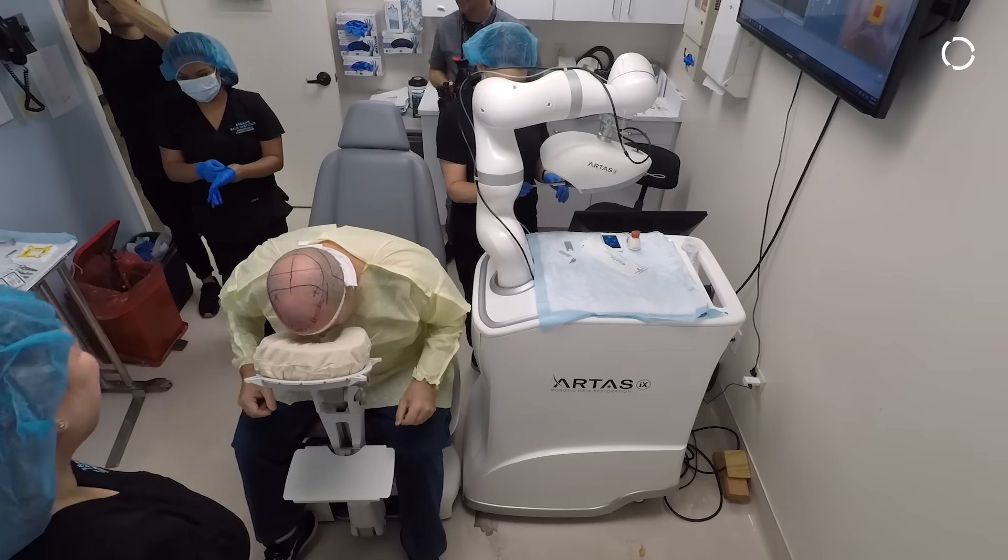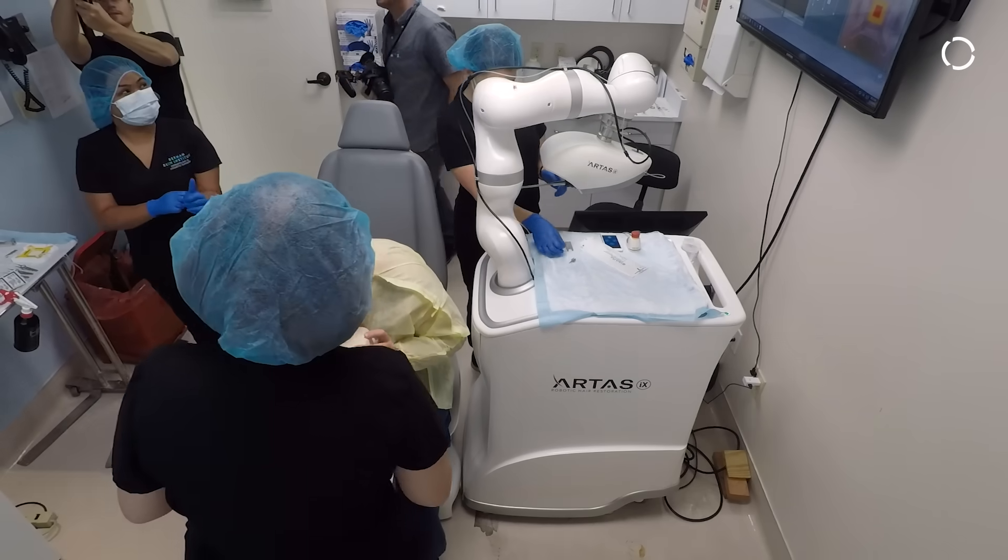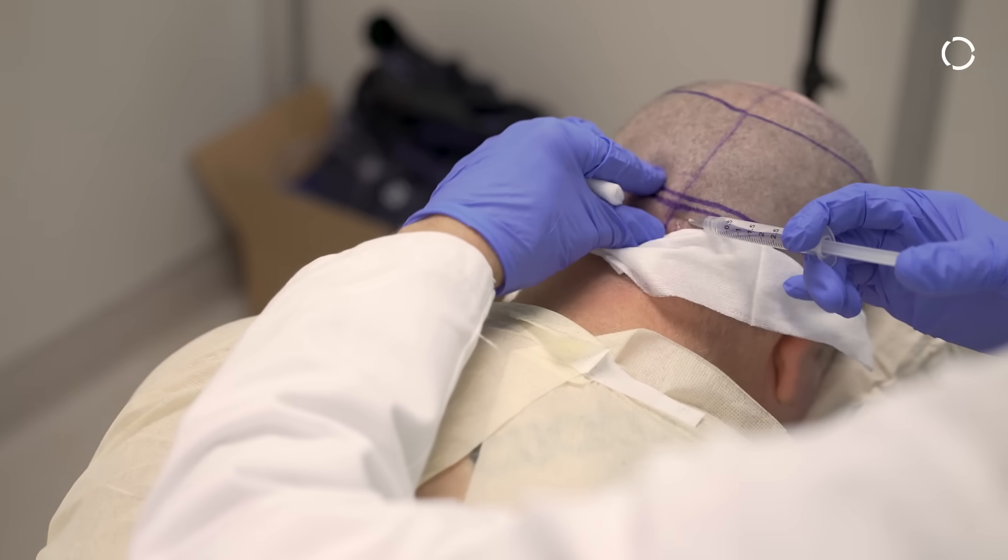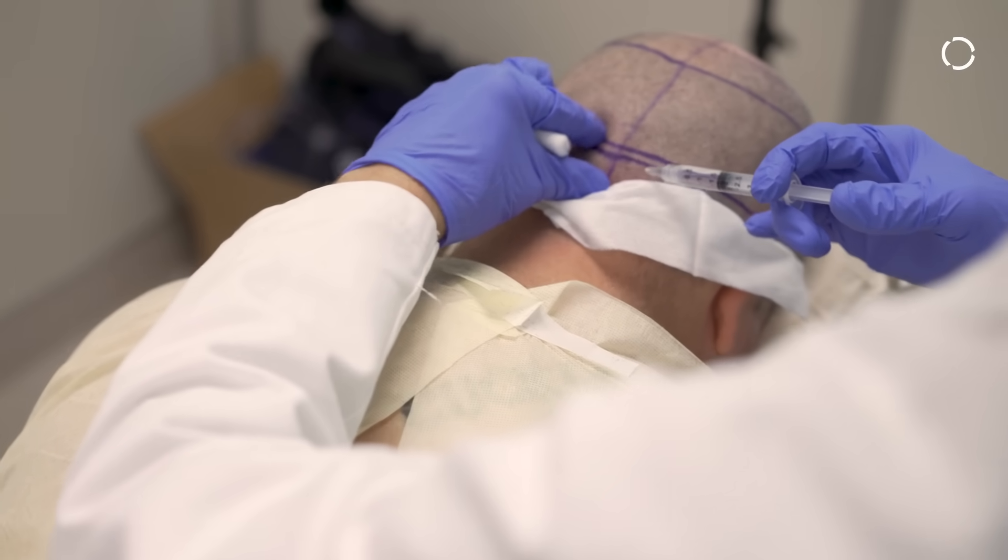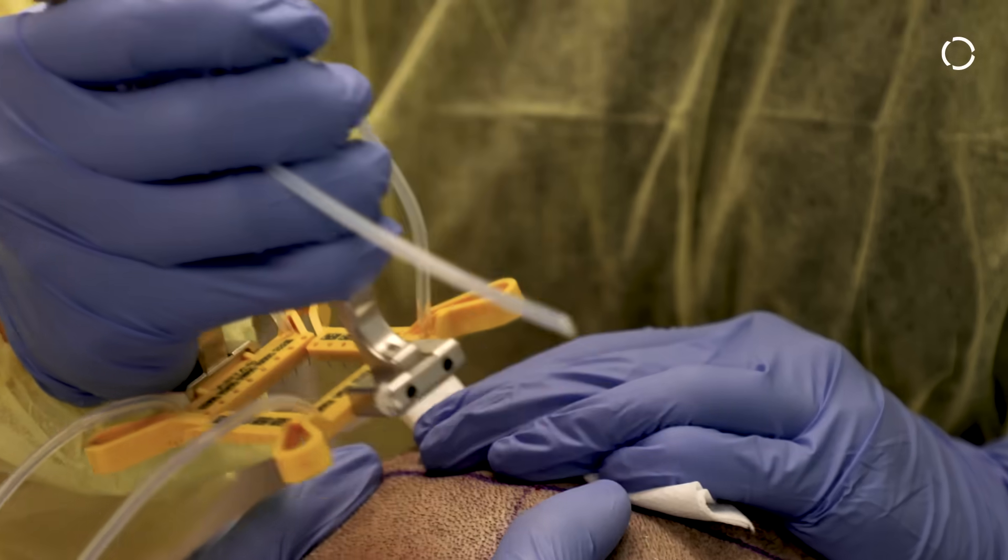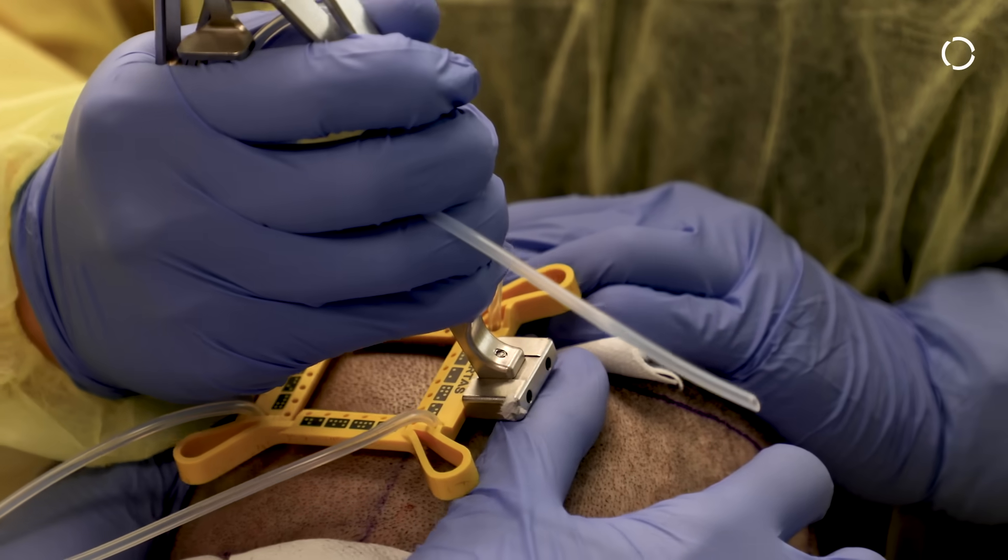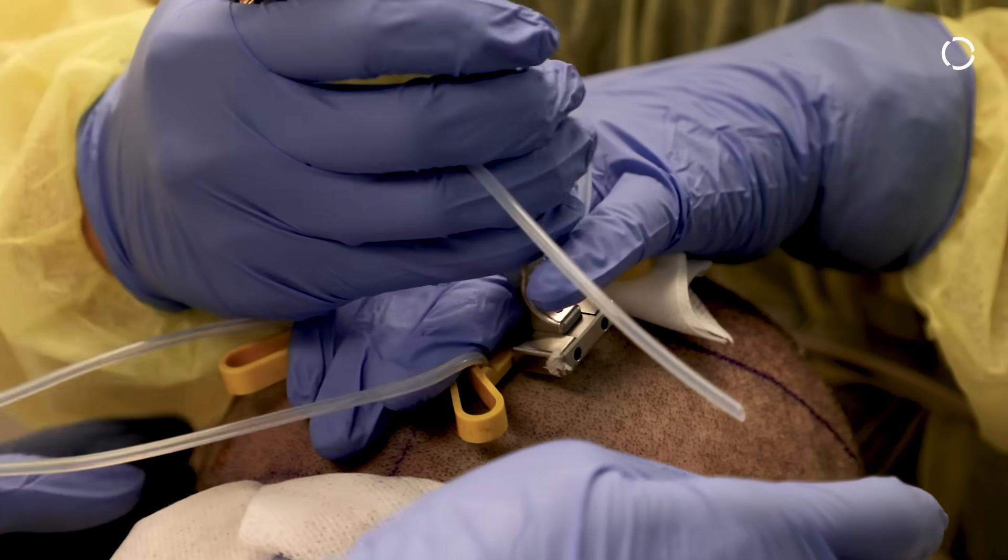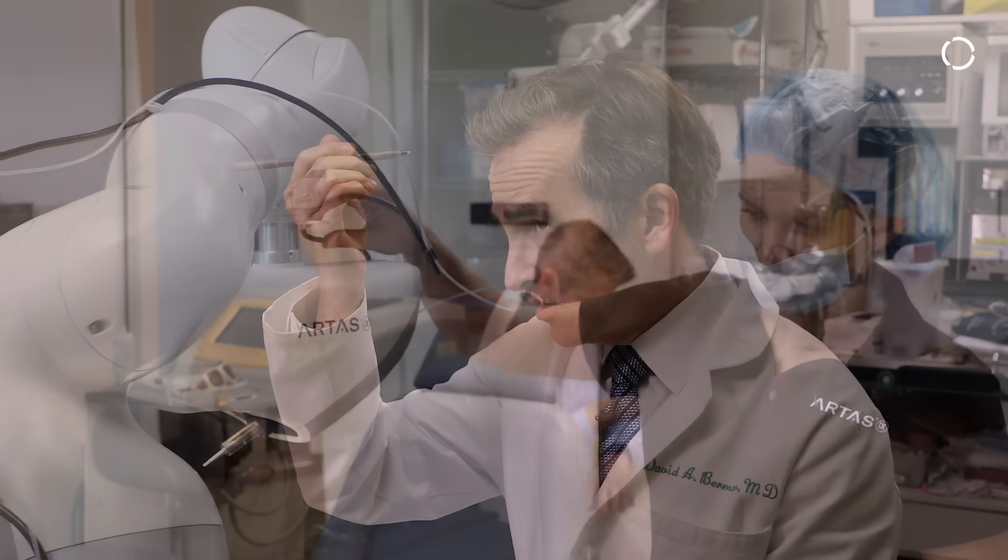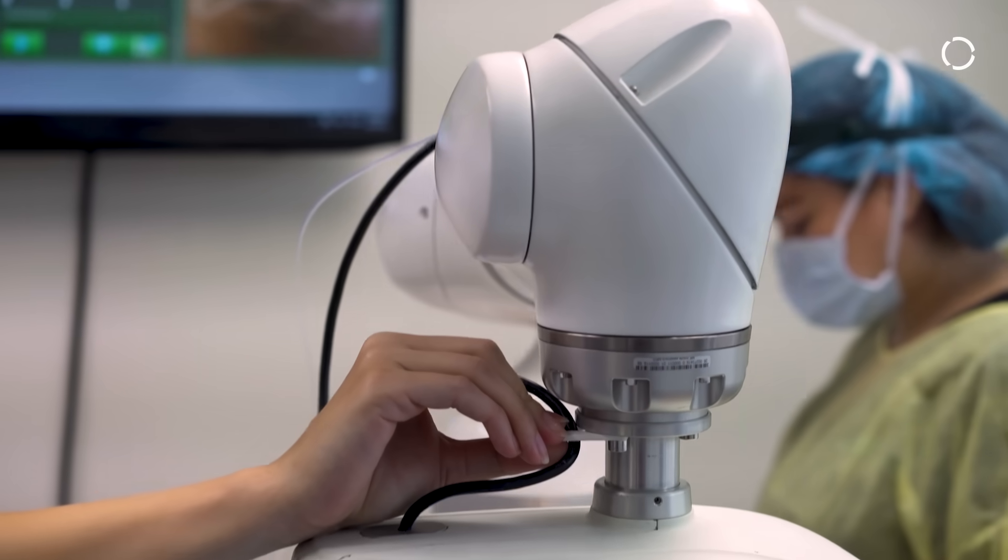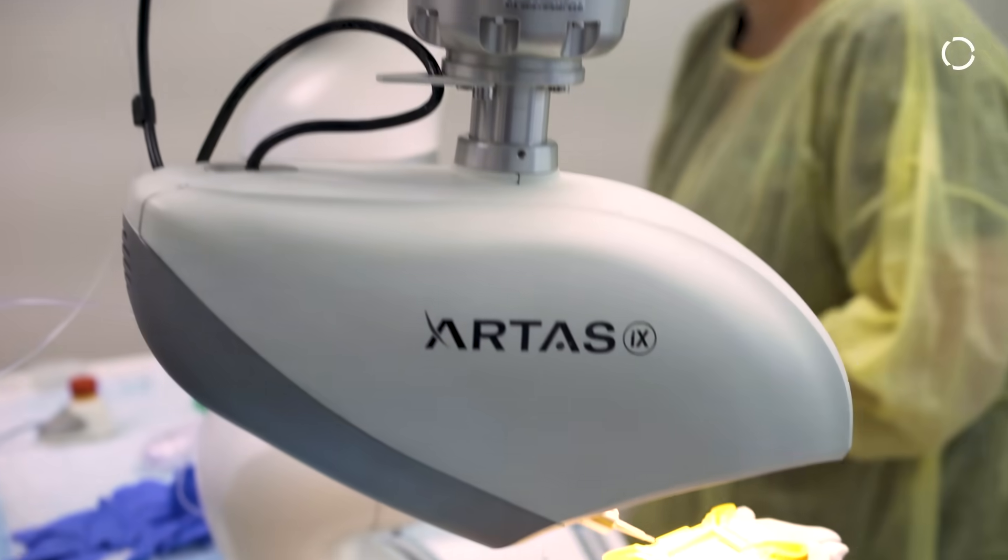It's a procedure that allows us to harvest from the back of the scalp without a linear scar. So instead of the old FUT or strip procedure, we're using the robot to take a smaller than one millimeter punch device to punch out these little tiny grafts that contain one to three hairs, on average 2.2 hairs per graft. After we take those out, we can also with the robot make incisions, and now with the latest system we can actually implant using the robot.